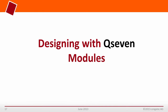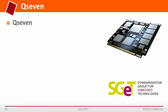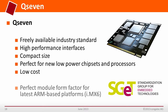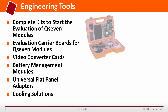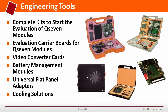How to design a carrier board based on Q7 modules: there are shortcuts available based on the three available standards. Download the standard from the Q7 or the SGET webpages as a good starting point. Going to the Congatec website, you find many more tools to support your design. We have complete starter kits, evaluation carrier boards with complete documentation including schematics, which can be used as a perfect blueprint for your own designs. We also have battery managers with chargers for smart batteries, flat panel adapters for LVDS or other displays, and multiple cooling solutions depending on your application needs.